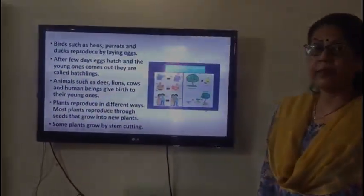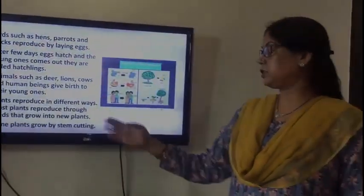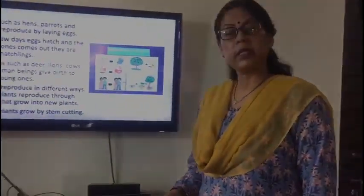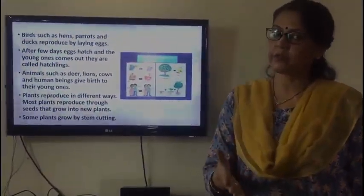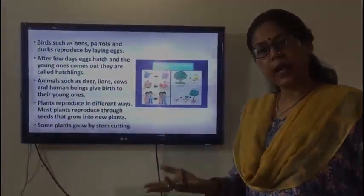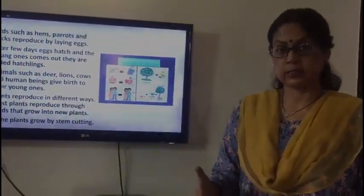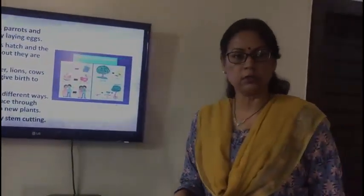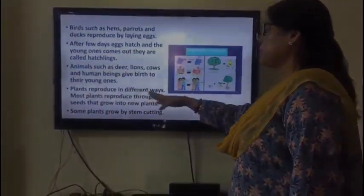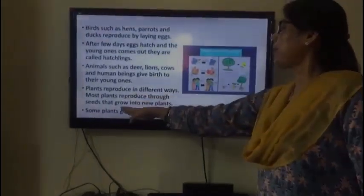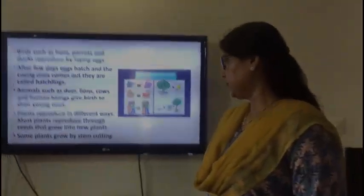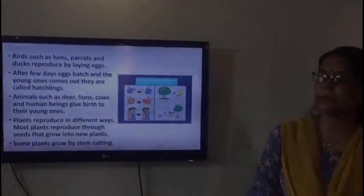Mammals such as deer, lions, cows, and human beings give birth to their young ones. You have taken birth from your parents and you look like them. Plants reproduce in different ways — most plants reproduce through seeds that grow into new plants, while some plants grow by stem cutting.